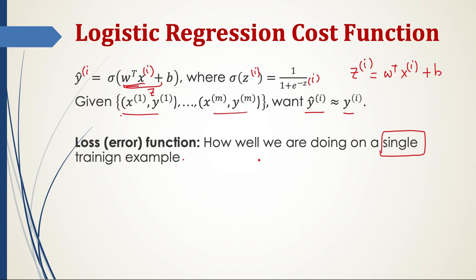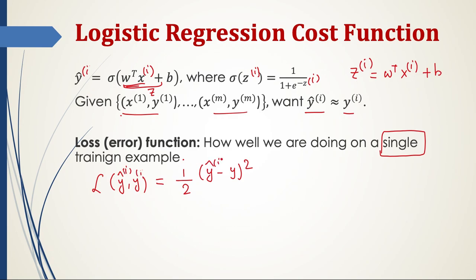First, let's understand the loss function. What can be a good loss function? One option is to find the squared difference — for the i-th training example, look at the actual label and the predicted value, find their difference, square it, and take half of it. However, this is not used in logistic regression, although it is a valid loss function.